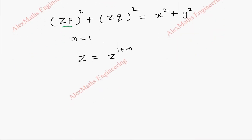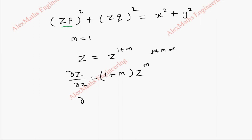When the power is not equal to minus 1, we take this substitution. Now, when I differentiate this, dou capital Z by dou small z is 1 plus m into z power 1 plus m minus 1, so it will be only m. In our case, the value of m is 1. So when I substitute m in Z, we get Z equals z power 2, and from this, dou Z by dou small z will be 2z.